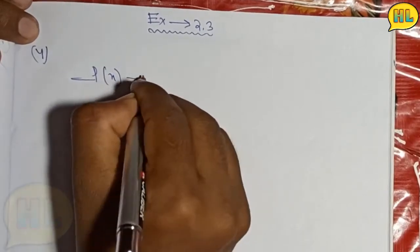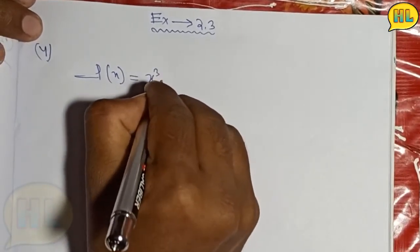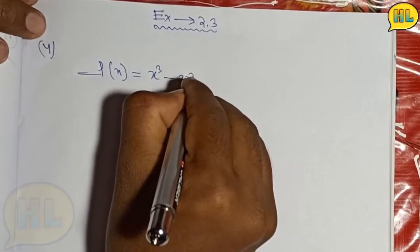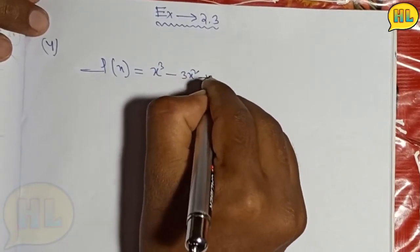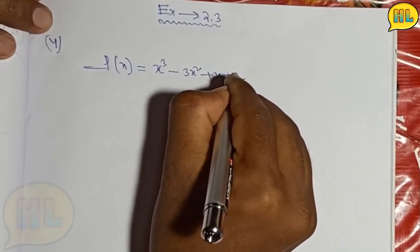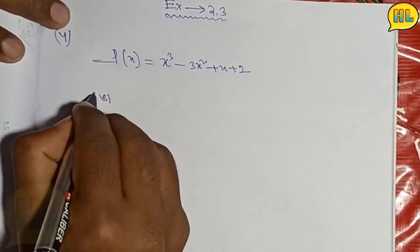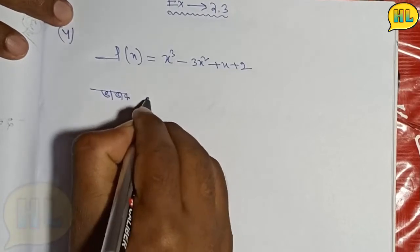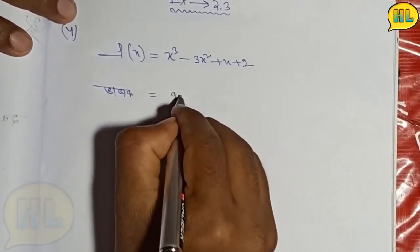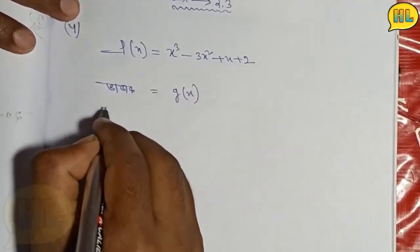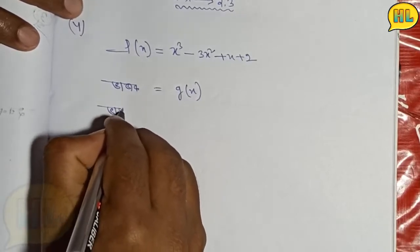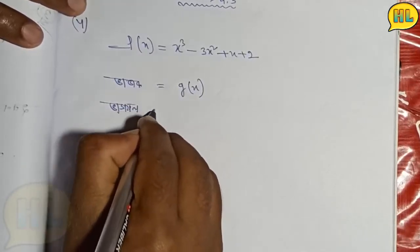We have p(x) which is x cube minus 3x square plus x plus 2. We need to show that this can be factored with the given factors.